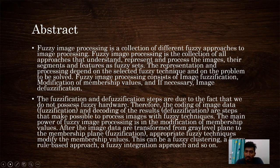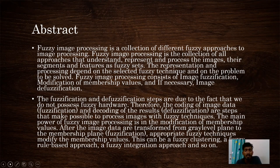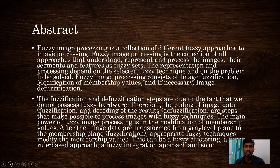Fuzzy image processing consists of image fuzzification, modification of membership values, and if necessary, image defuzzification. The defuzzification and fuzzification steps are due to the fact that we are not possessing fuzzy hardware. Therefore, the coding of image data and decoding of the results are steps that make it possible to process images with fuzzy techniques. The main power of fuzzy image processing is in the modification of membership values. After the image data are transformed from the gray level plane to the membership plane, fuzzy techniques modify the membership values. This can be fuzzy clustering, a fuzzy rule-based approach, a fuzzy integration approach, and so on.